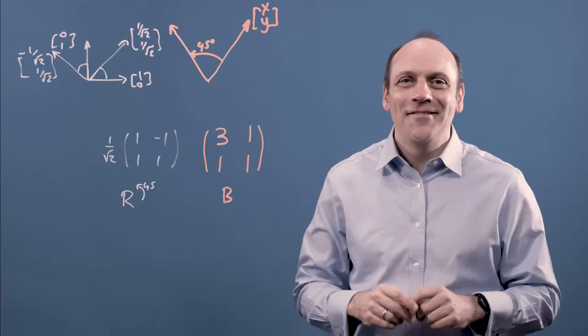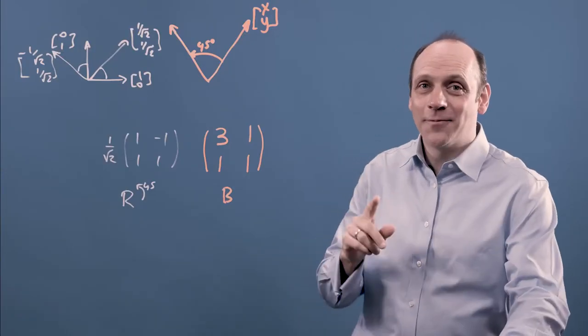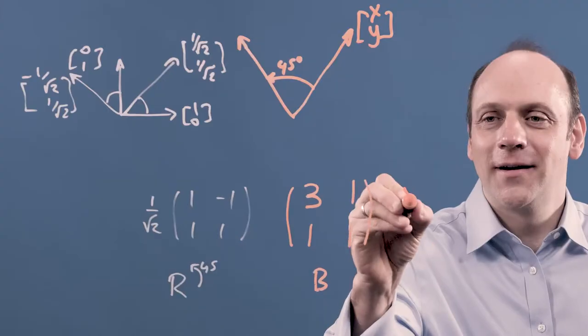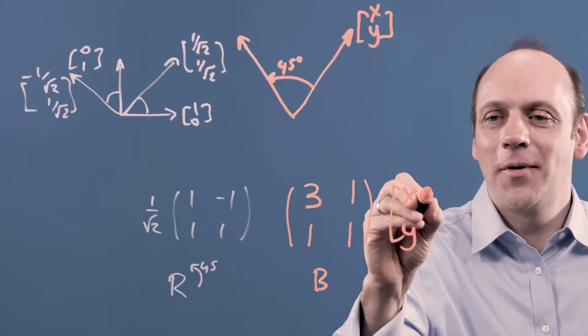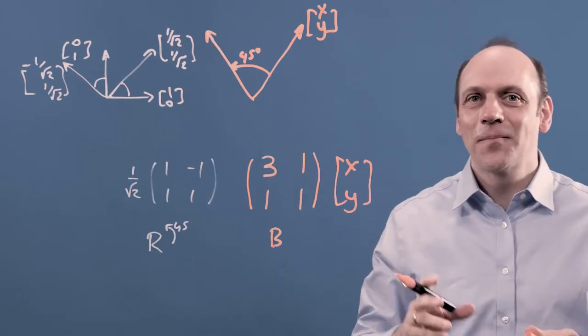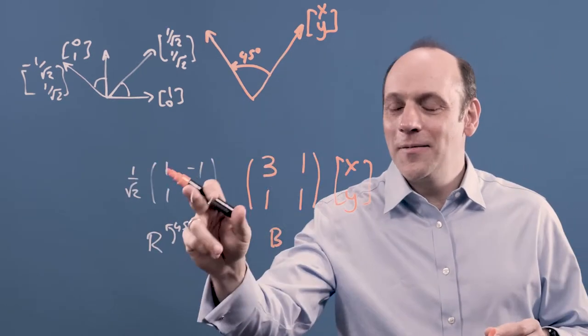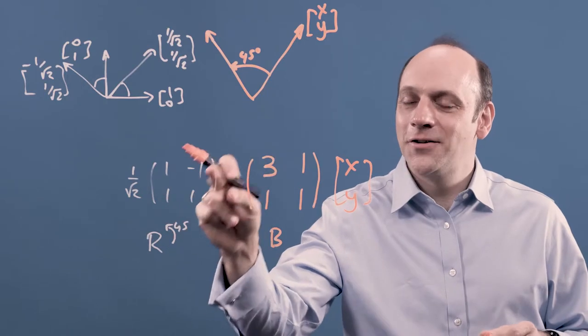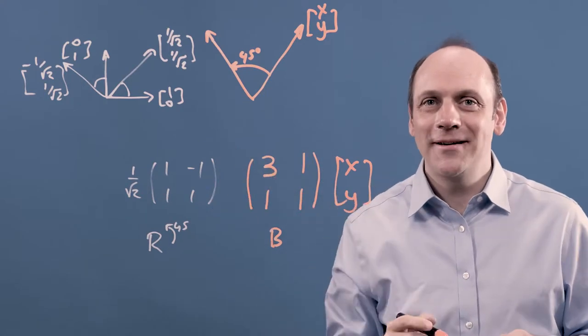So what I need to do is first transform the vector [x y] into my basis. And I do that by multiplying it by B, right? Then I can apply my nice sensible rotation, R, to that vector that's now in my basis.